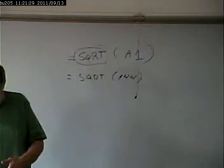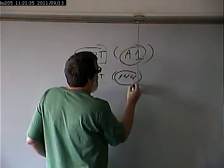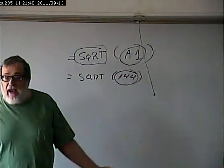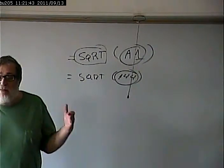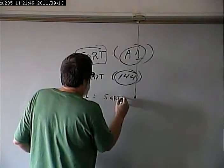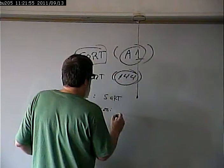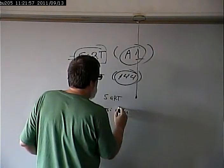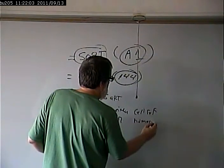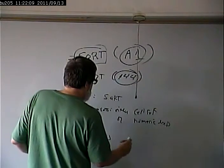The argument that it takes is either a cell reference, or a numeric expression of some kind or the other. And what does it give me back? It gives me back a number. So if you're going to document this, it would have function name, square root. Arguments actually are either a cell reference, or a numeric expression. And what it returns is a number.